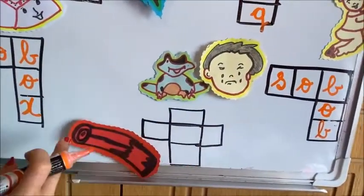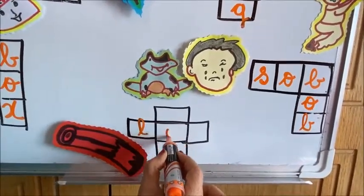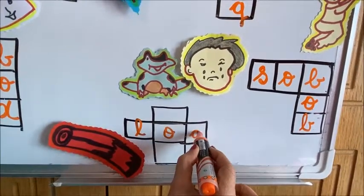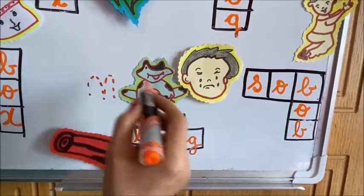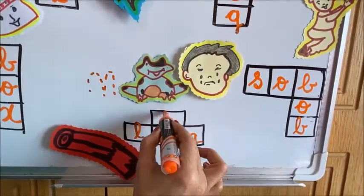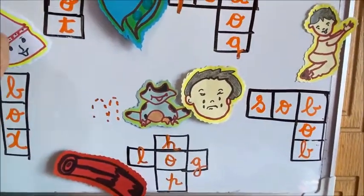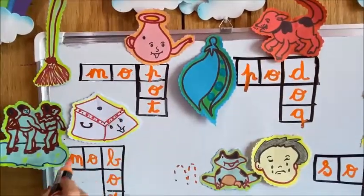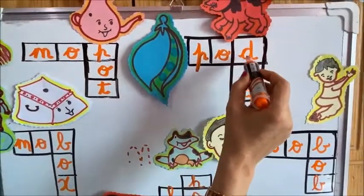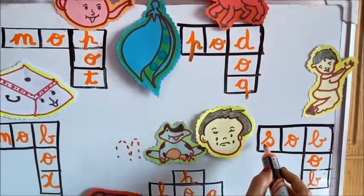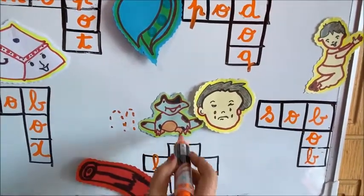Now let's go to the last one. What is this? Log — L-O-G, log. And the frog is hopping and sitting, isn't it? H-O-P, hop. So read again: mop, pot, mop, box, pod, dog, sob, bob, log, hop.